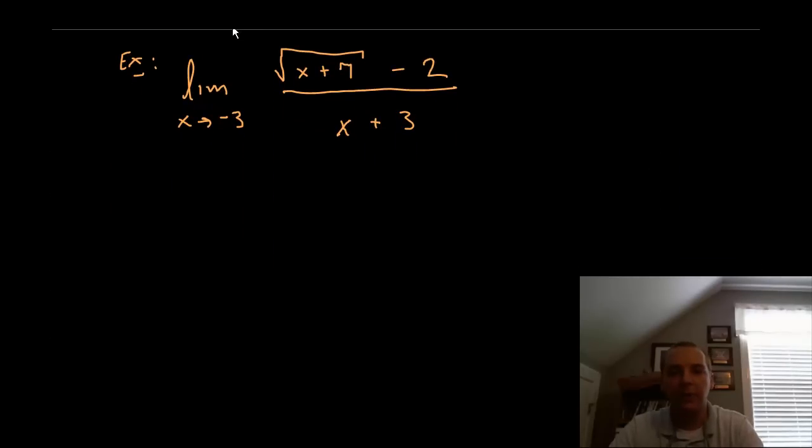The last example is a little tougher but I just want to show you another algebra technique you might need. The limit as x goes to negative 3 of the square root of x plus 7 minus 2 divided by x plus 3.